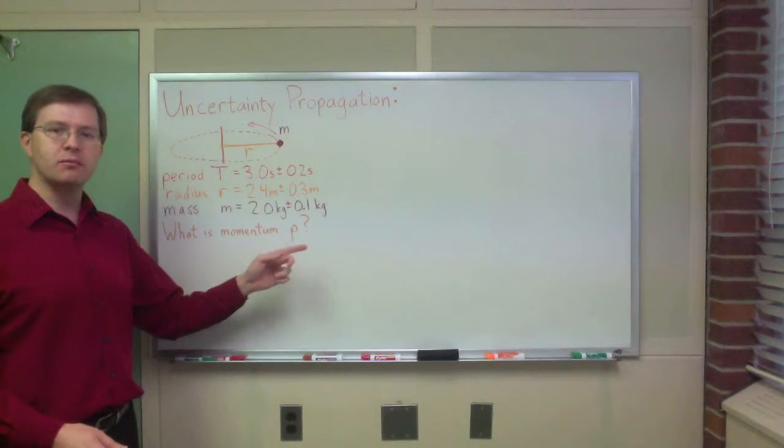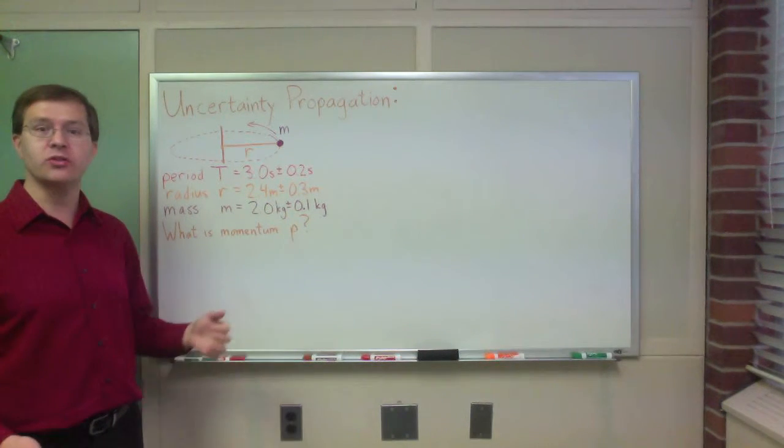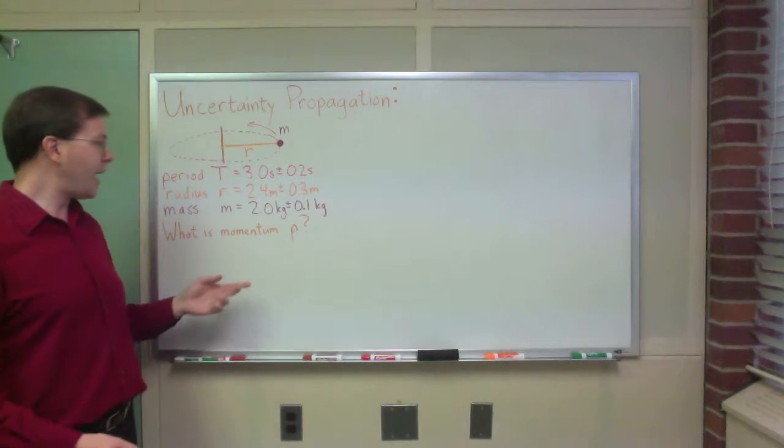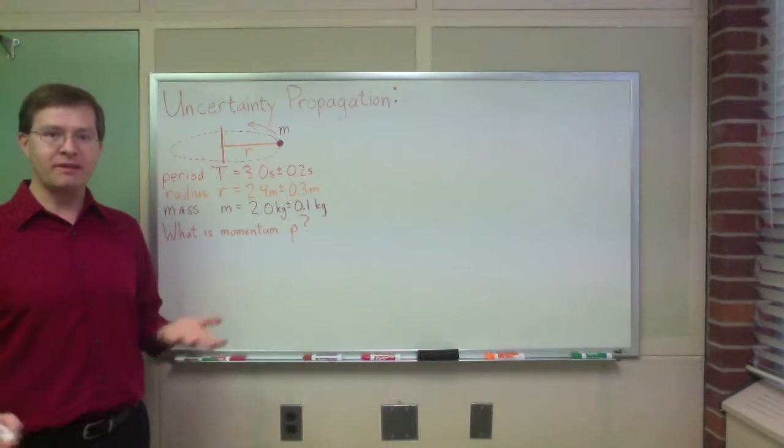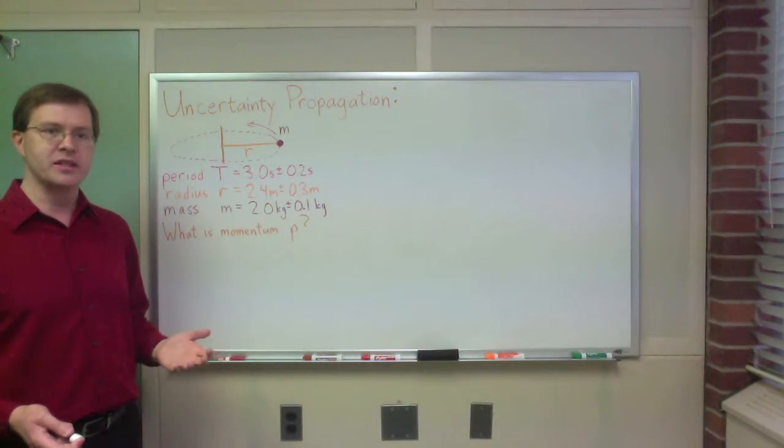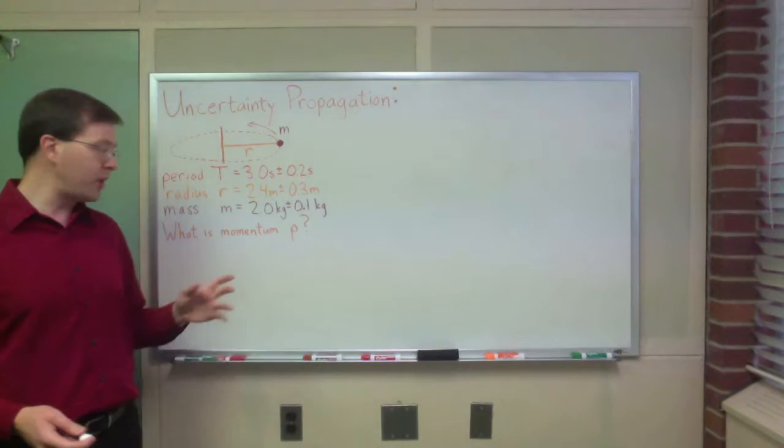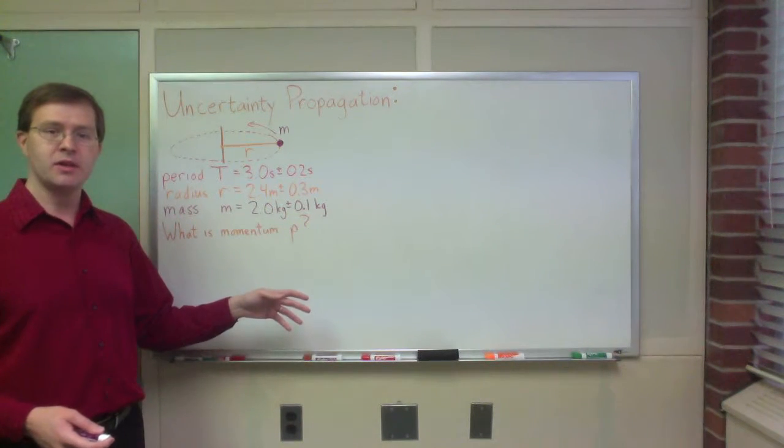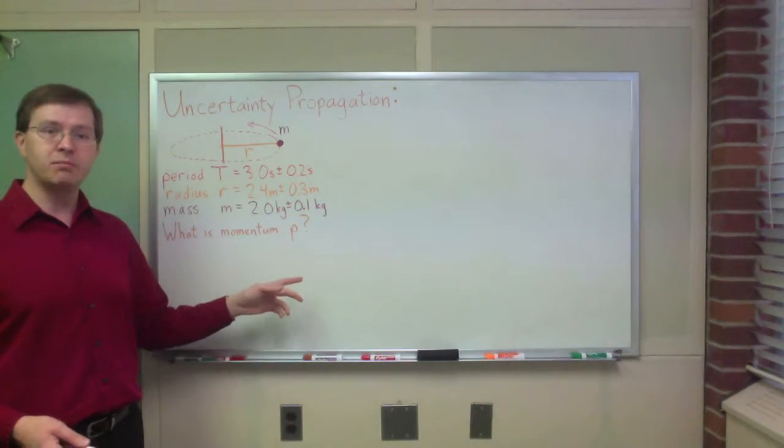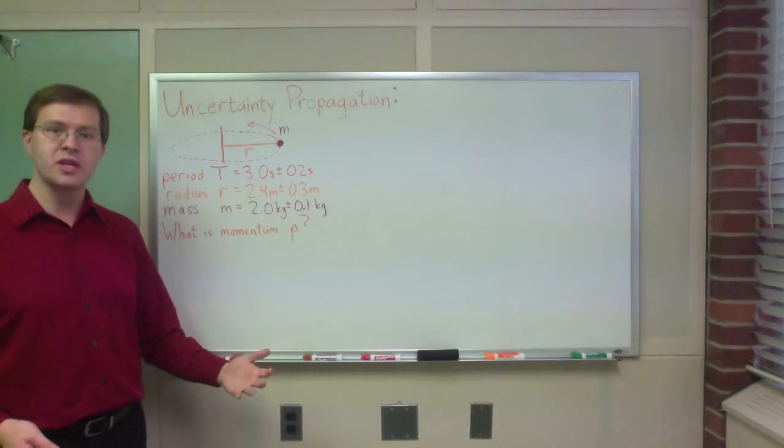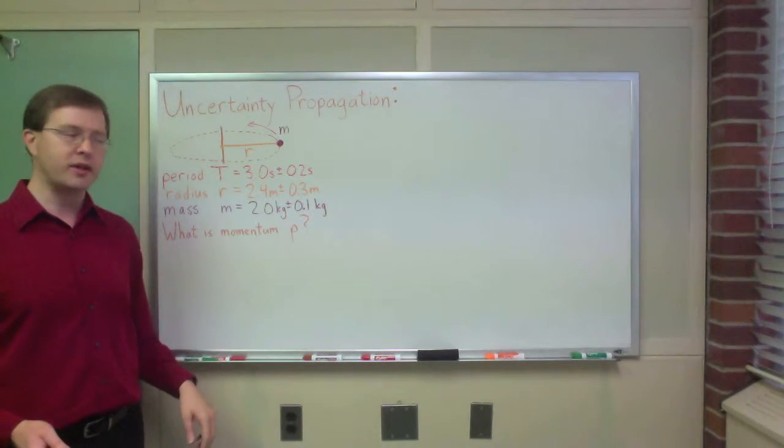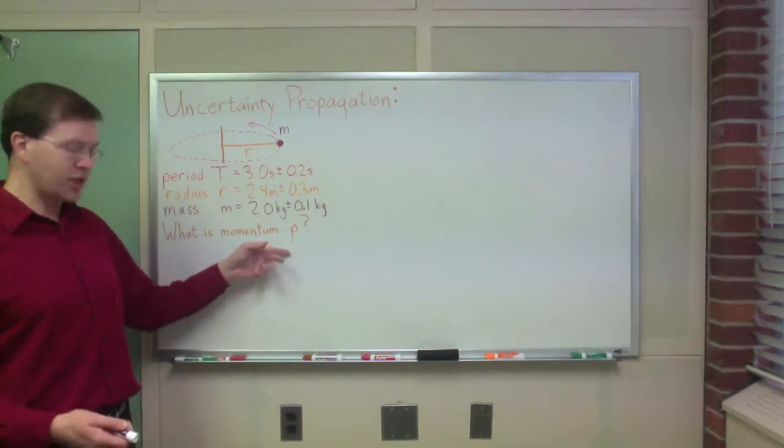And to figure that out, I just have to plug through the equations. Now what I'm going to do, I want to know not just the momentum, but the uncertainty in the momentum. I'm going to start by just calculating p to show how the calculation flows, and then we'll propagate uncertainty through it. So, for example, we start out.